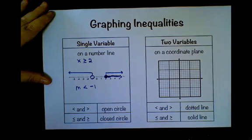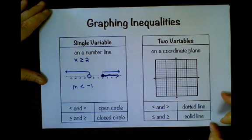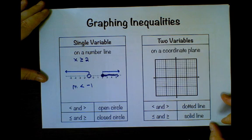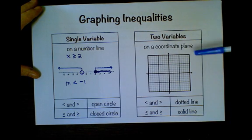How about m is less than negative one? So I would put an open circle on negative one and I would draw in the negative direction, or I could scribble, whichever one makes you happy.